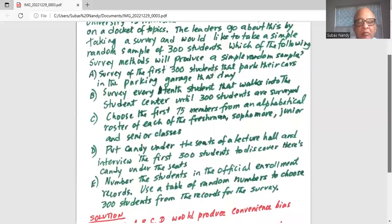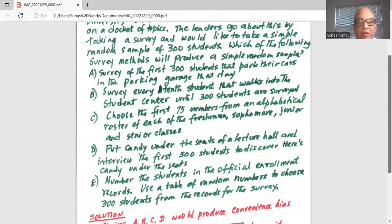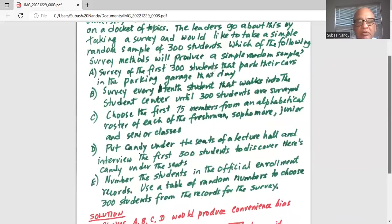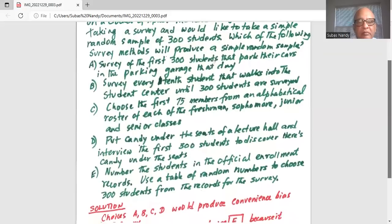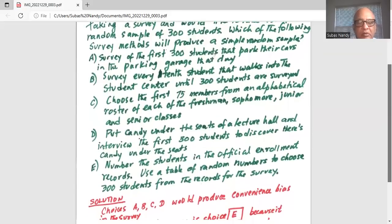Option E: number the students in the official enrollment records. Use a table of random numbers to choose 300 students from the records for the survey.